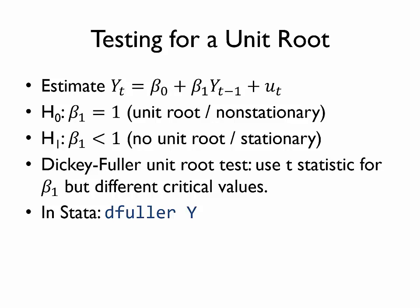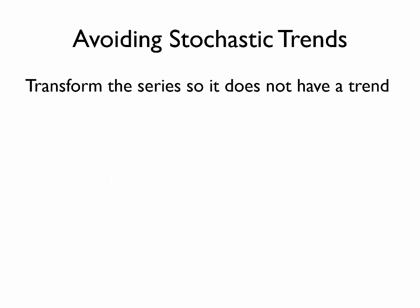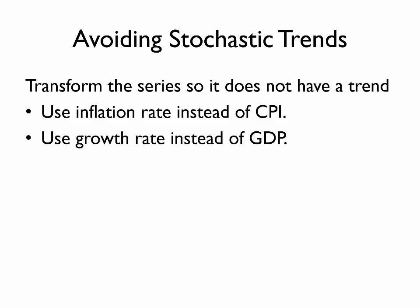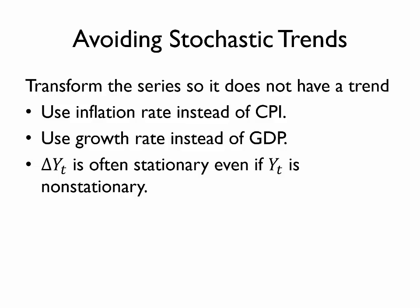Finally, if we're concerned that a variable that we are interested in does appear to have a unit root, or at least we can't rule it out, we may be curious what we should do about it. Probably the best way to avoid a stochastic trend is to try to transform the time series so that it no longer has a trend. So a few examples. We could use the inflation rate instead of the consumer price index. The inflation rate is just the percent change in the consumer price index. We could use the growth rate of the country instead of the GDP in a given year. It turns out that changes in a variable often end up being a stationary process, even if the underlying variable y is non-stationary.